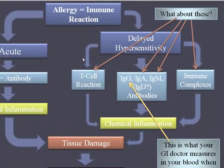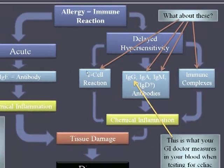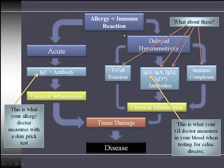The big flaw in all this testing is that it doesn't account for all reaction types. If you tested negative on IgG, IgA, and IgE, that doesn't mean you didn't produce IgM antibodies, immune complexes, or a T cell reaction. My advice is to get all of these tested to properly rule out an immune reaction.